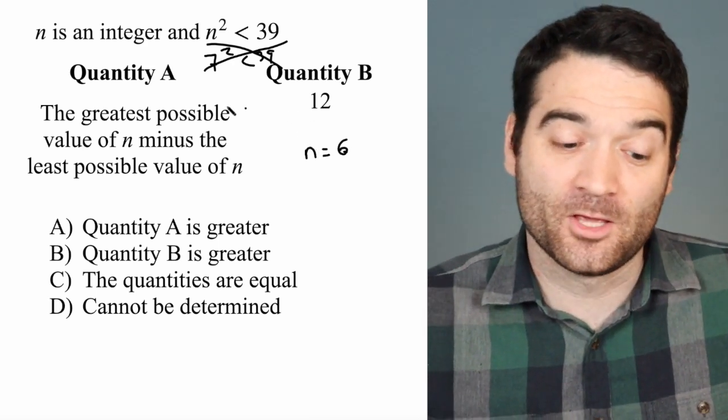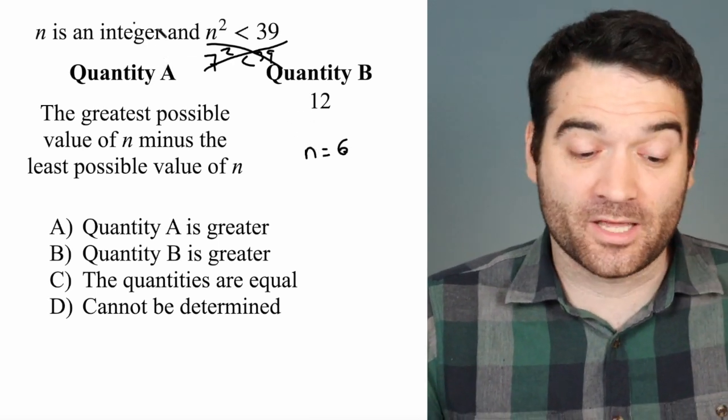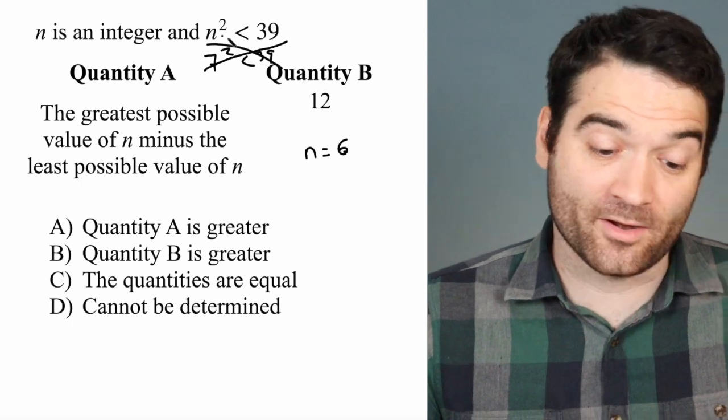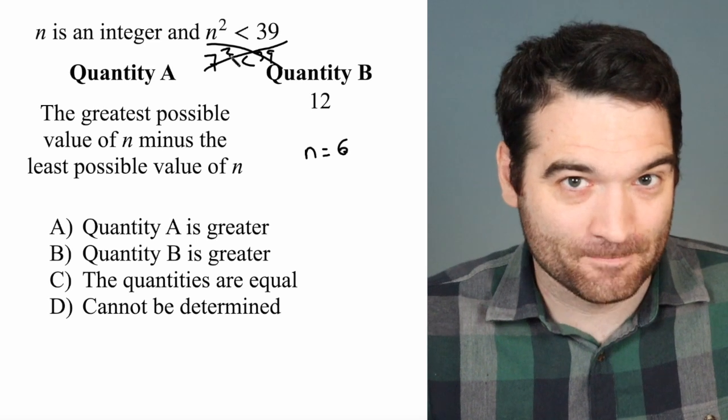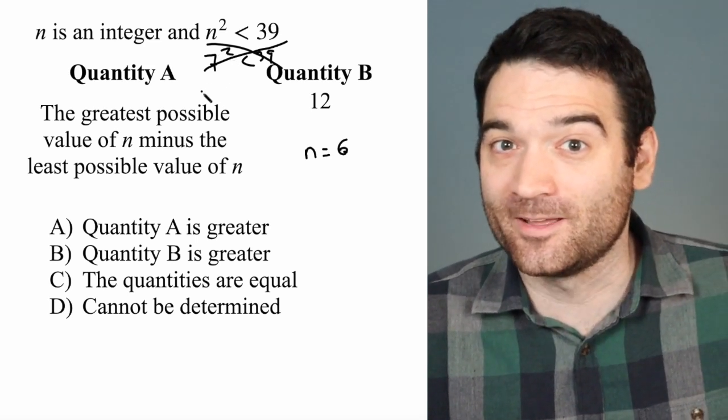What's the least possible value of n? You might say it has to be 0, because if I go all the way down, 0² is less than 39. But if you do that, you're ignoring all the negatives. Remember, a negative number squared becomes positive.